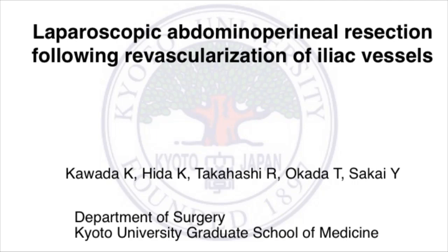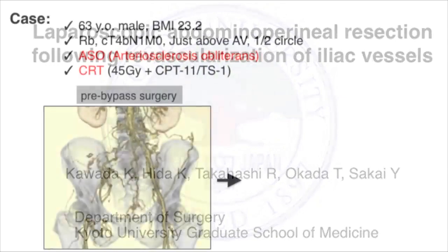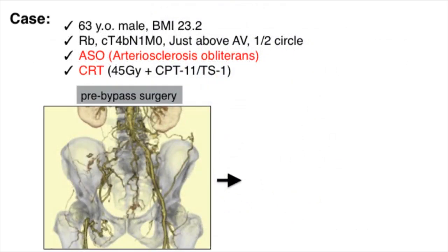Here we present a case of laparoscopic abdominal perineal resection following revascularization of the iliac vessels. The patient was a 63-year-old man with low rectal cancer located just above the anal verge.